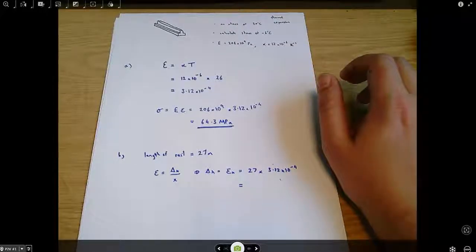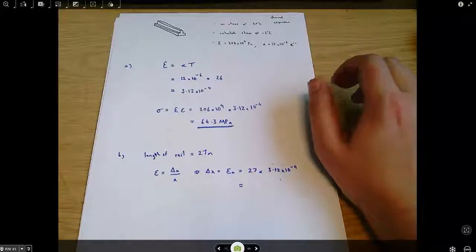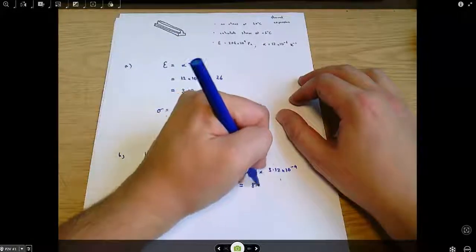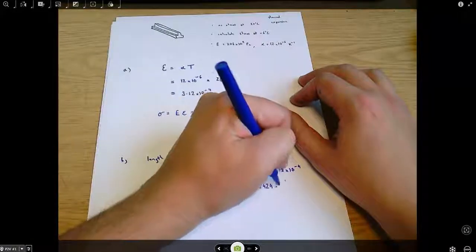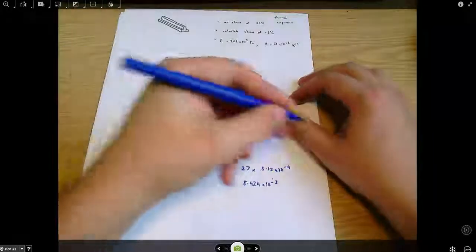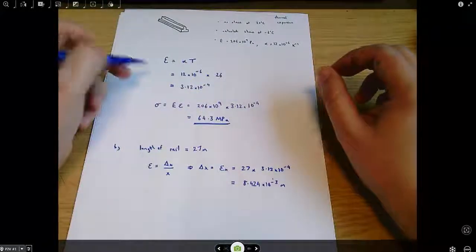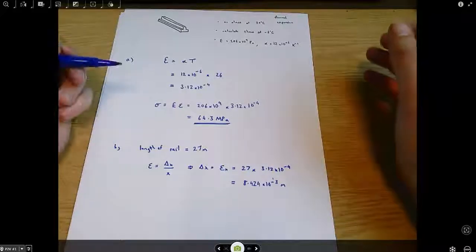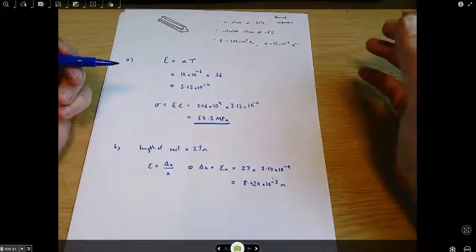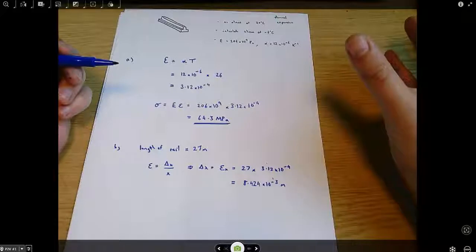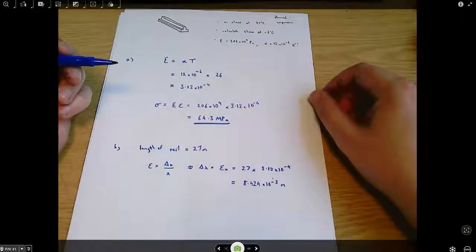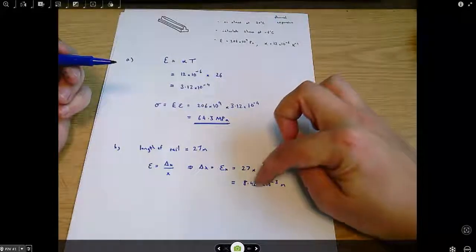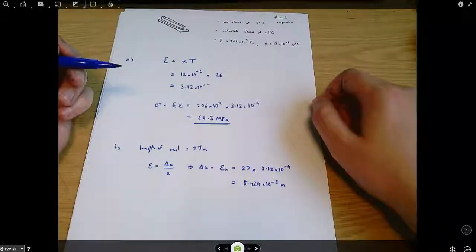So, 27 times 3.12 times 10 to the minus 4 is 8.424 times 10 to the minus 3. And this is a change in length, so it's in metres because the length of the rail was in metres. So, what we're saying is this rail wants to contract when it cools by 8.4 millimetres. This is 8.424 millimetres.